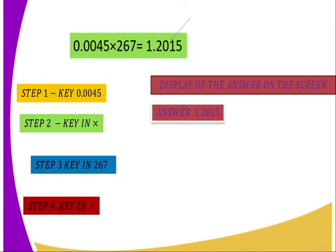Now let's go to multiplication. If you are given an equation like that, you just press the way they are. Step one, press 0.0045. Step two, press the multiplication operation key. Step three, press 267. There is no key that gives you 267, but you combine them. Step four, press equals. The answer will be displayed on the calculator as 1.2015.